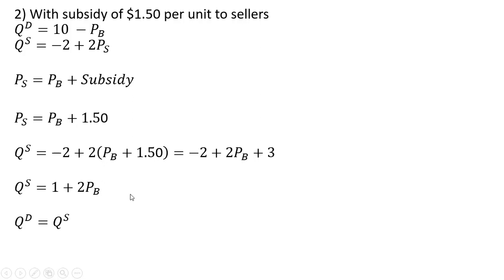So now the next step is just setting quantity demanded equal to quantity supplied. Here's our quantity demanded, and here's our quantity supplied, the new quantity supplied in the face of a subsidy. And we have one equation and one unknown, so we're going to just solve that.